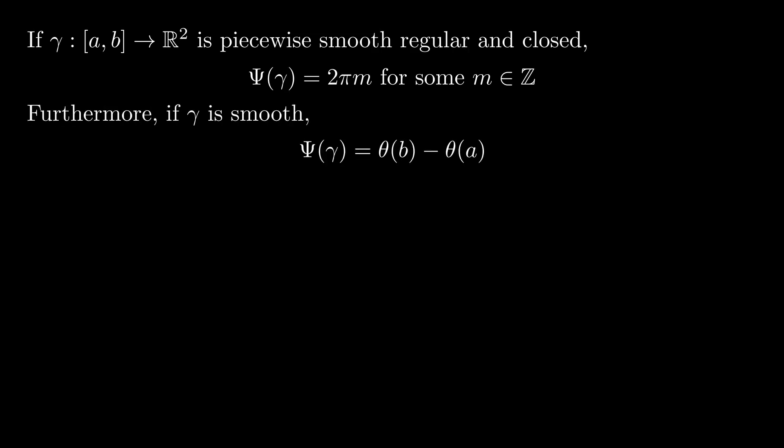In the particular case when the curve is smooth, this follows from the fact that the initial value of theta and the final value of theta have the same sine and cosine, so they differ by a multiple of 2π.